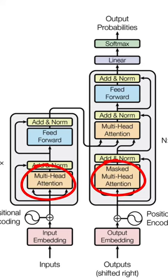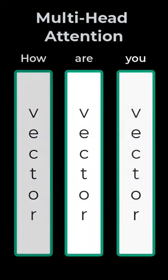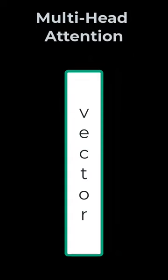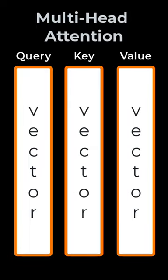How does multi-headed attention work? We have a vector that represents each word. This is then mapped to three vectors: a query, a key, and a value.